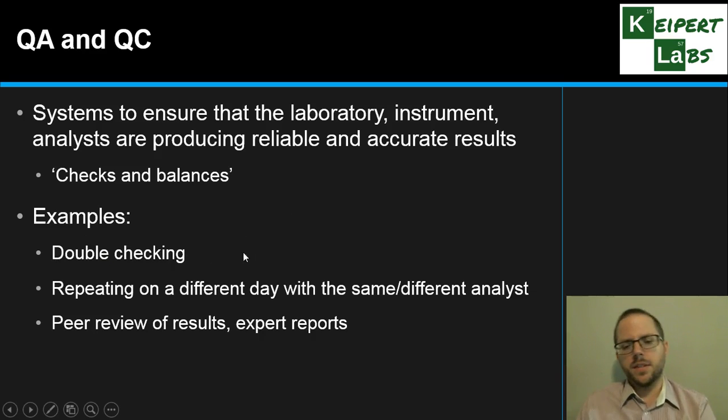So some of the examples of things that we might put in place for double checking - different analysts doing things, repeating things on a different day with the same analyst or maybe a different analyst, having another look at things. Once analysis has been done, reports are done - peer review of the results, getting a second opinion, and also reading over expert reports and giving feedback on that, checking through the results. This is the sort of thing that used to happen when I was working in forensics, that we would always get one of the other experts to have a look at the report and to go through and check the wording and the extent of the conclusions and so on.